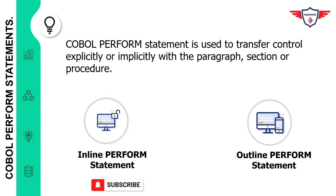The major difference between inline and outline perform is that the inline perform statement executes the piece of logic or set of statements between the PERFORM and END-PERFORM keywords — for example, a PERFORM UNTIL statement. The outline perform statement is used to execute logic included in a separate paragraph or section — for example, a normal PERFORM followed by a paragraph or section name.